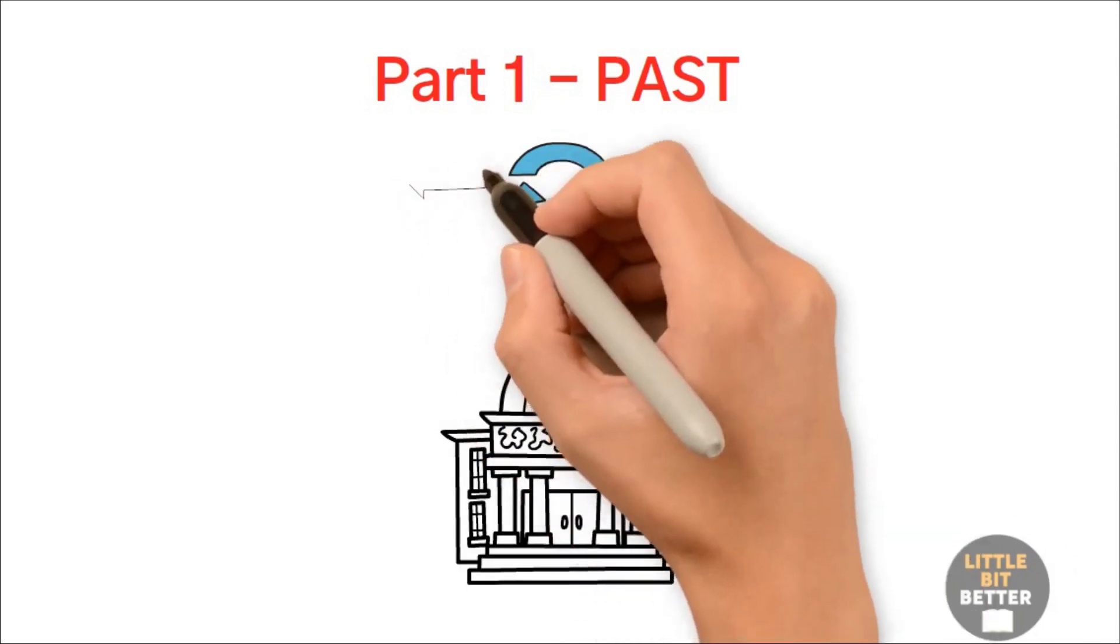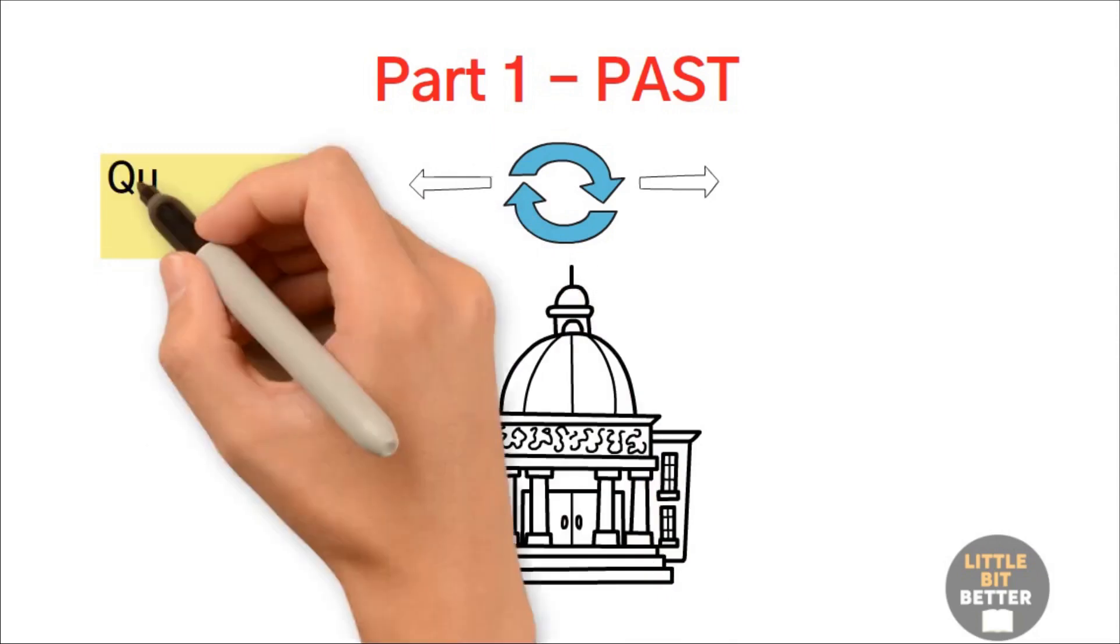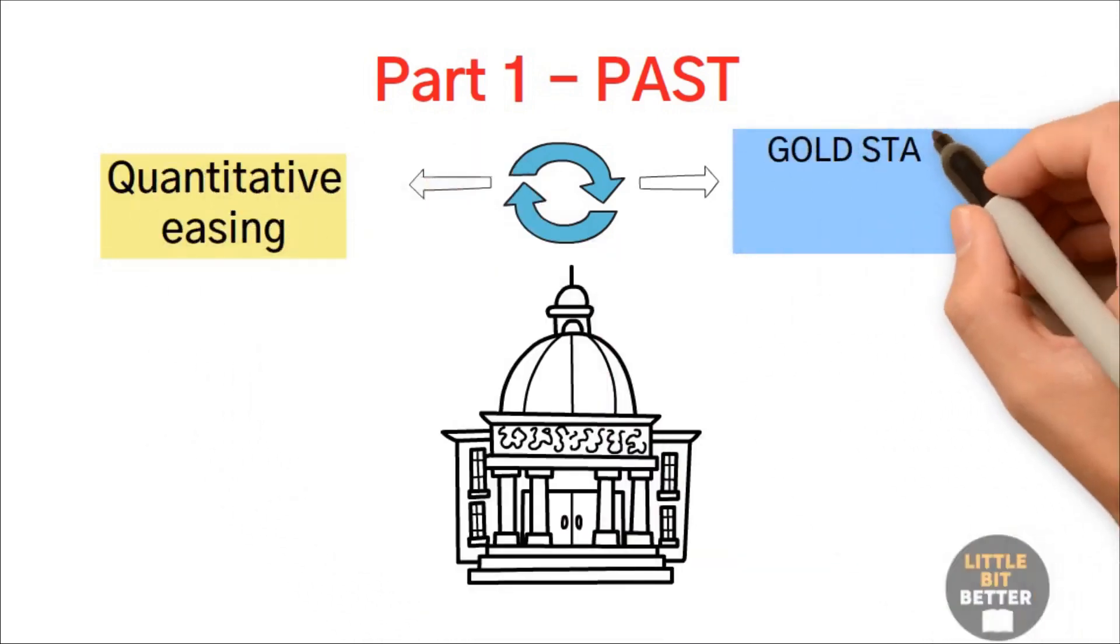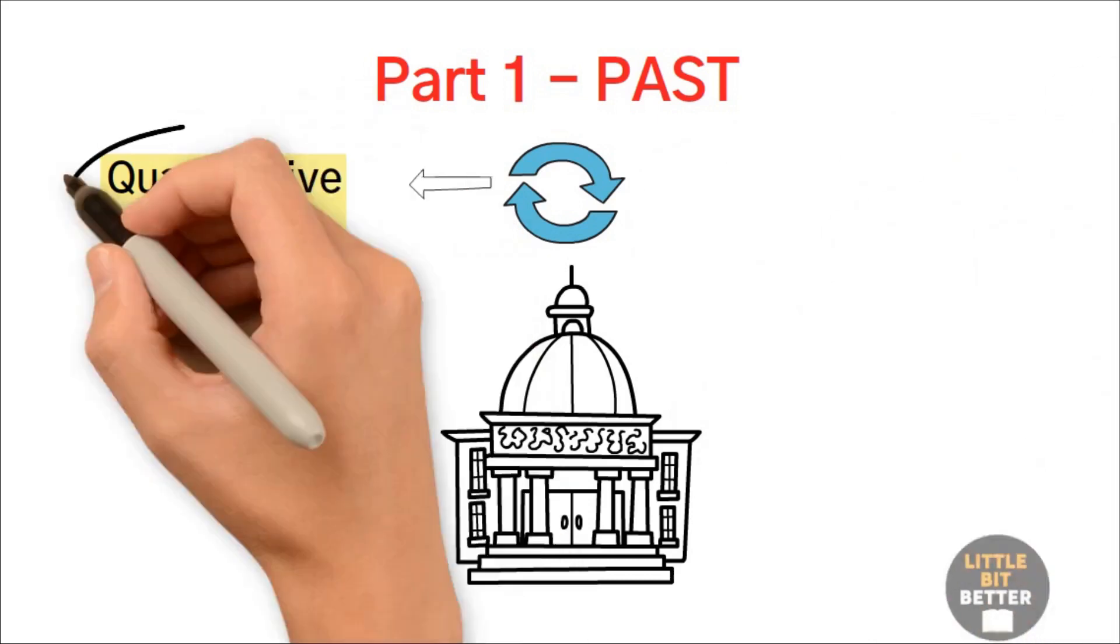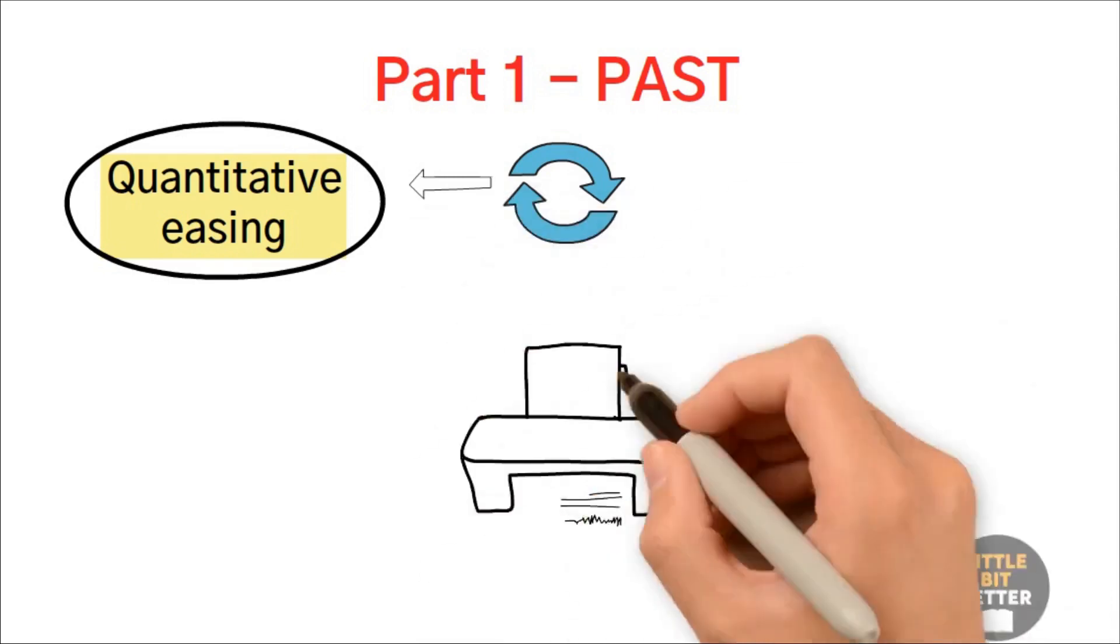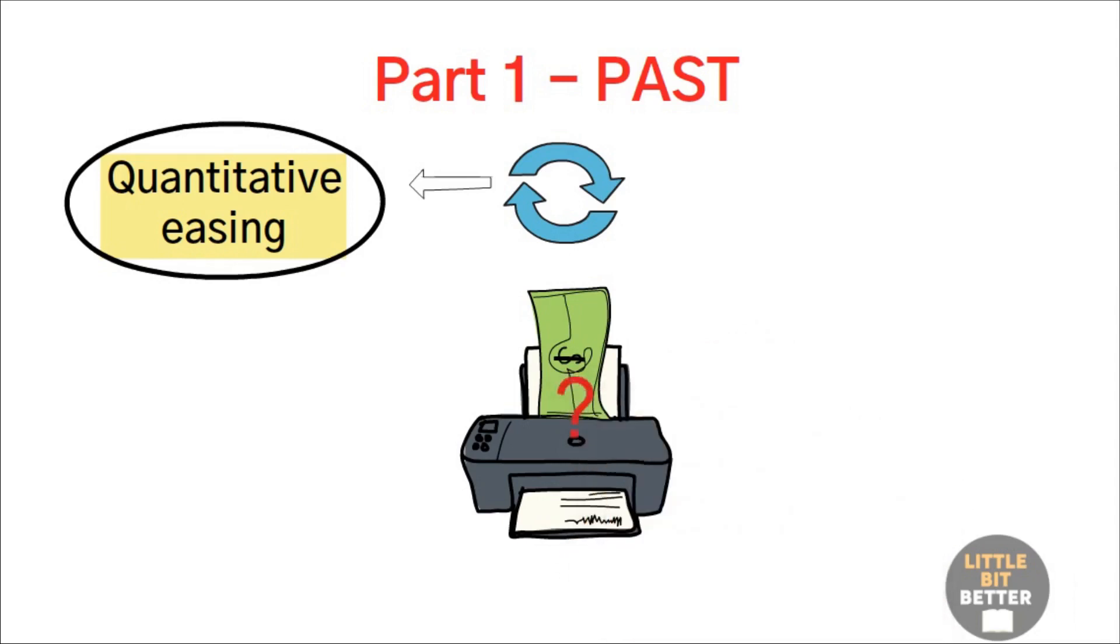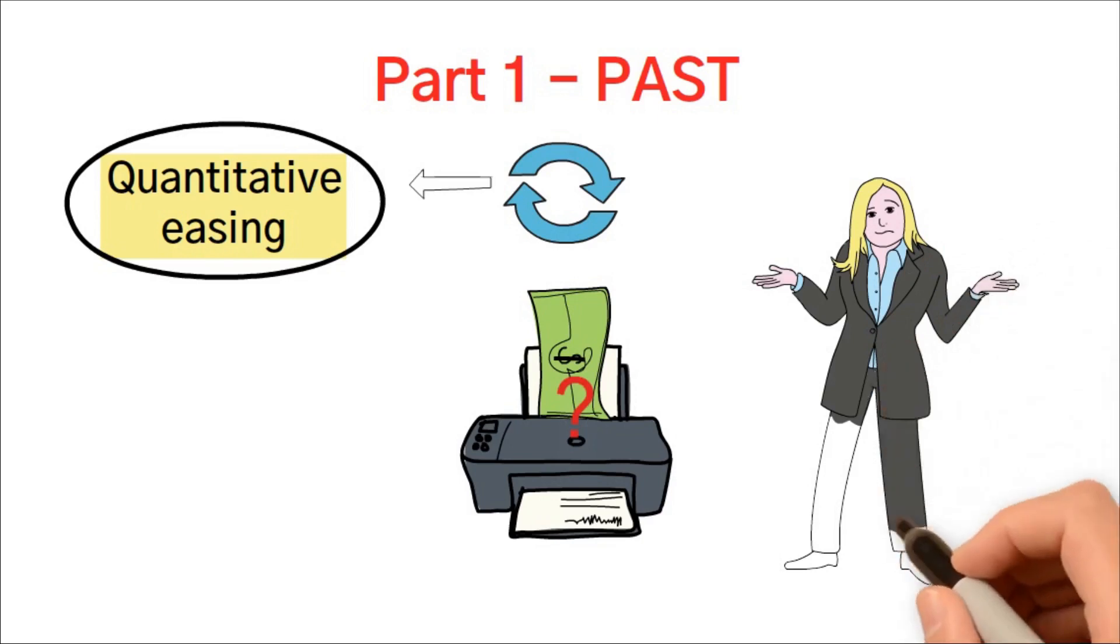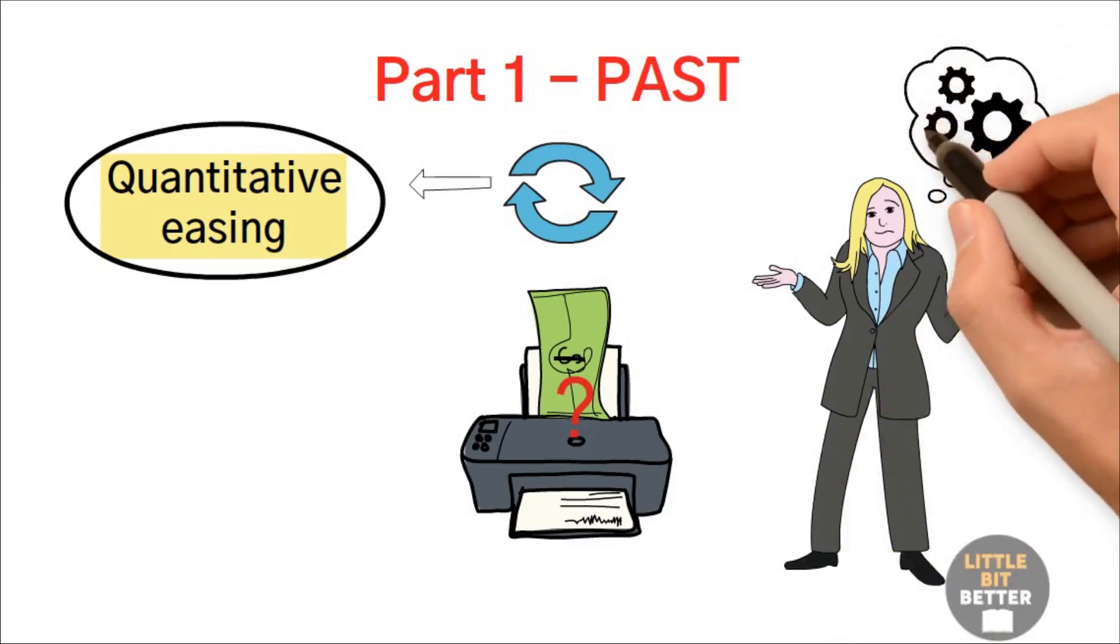Kiyosaki talks about two important terms when he is reviewing the past. First is quantitative easing, and the second is gold standard under Bretton Woods Agreement. Let us start with quantitative easing. Quantitative easing simply means printing money. You might ask why we don't just call it printing money. Well, my assumption is that governments usually use complex terms so that the average person does not understand what is going on.